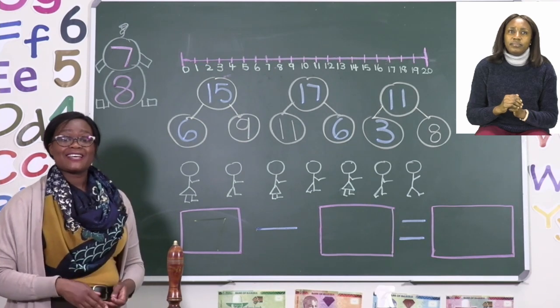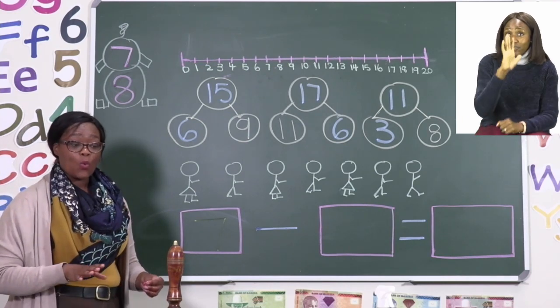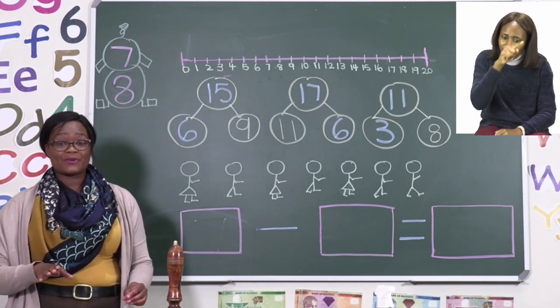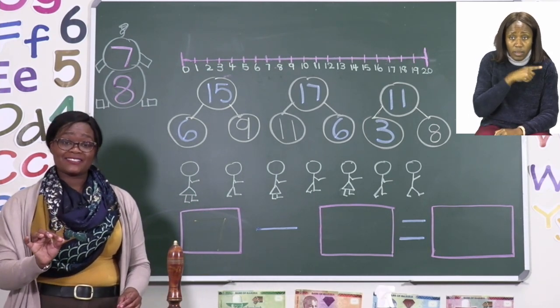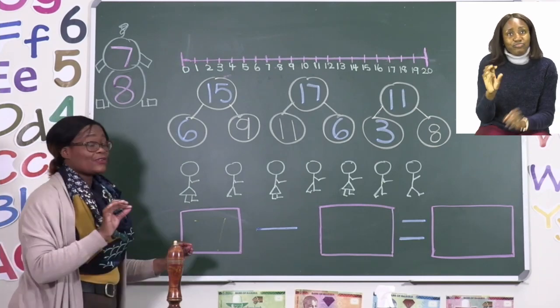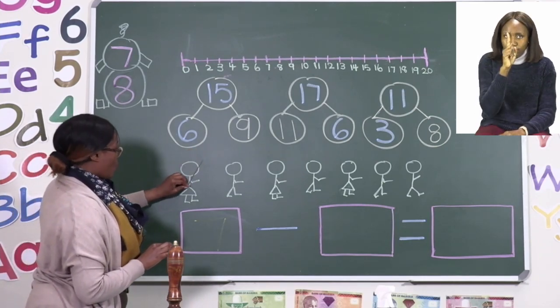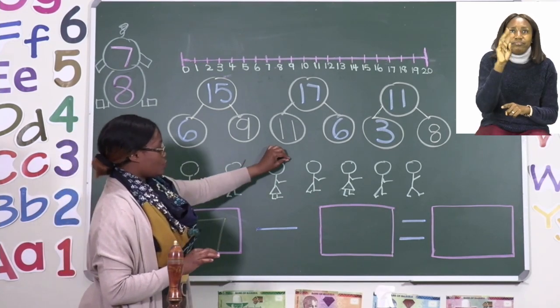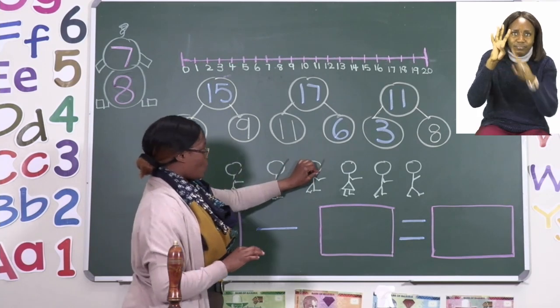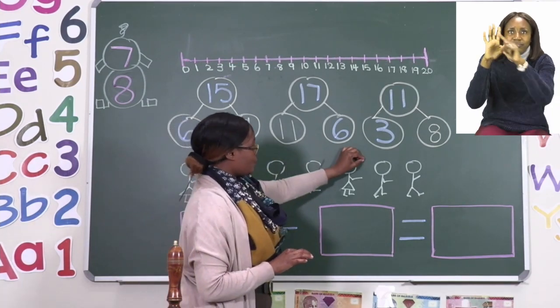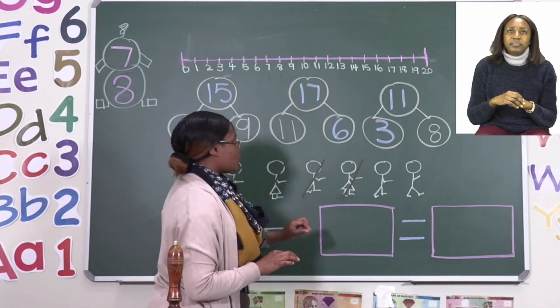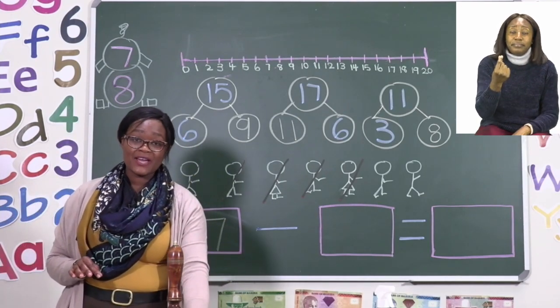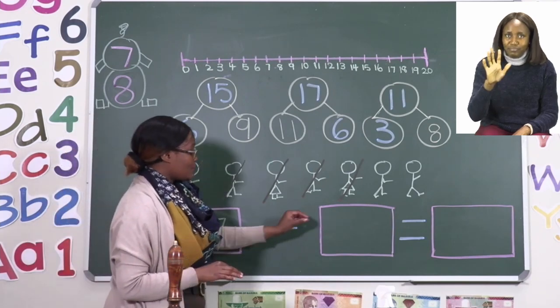Then the story sum says that 5 people walked away. So you need to cancel 5 people. I would like you to take your pencil and you cancel the 5 people. 1, 2, 3, 4, 5. So 5 people walked away. That is the same number that we have to write in the second box. 5.